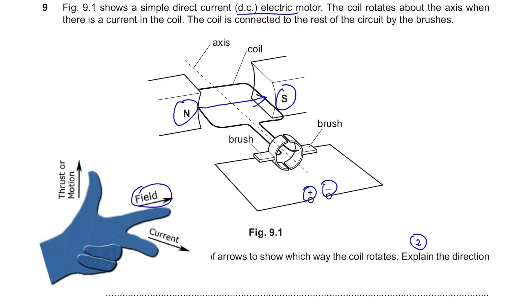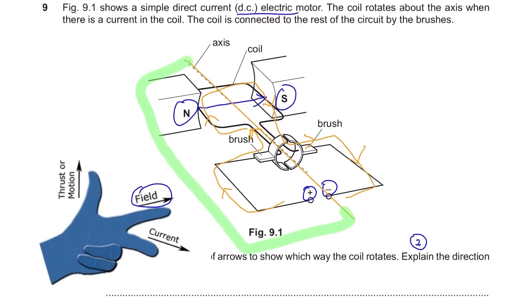Look at one side of the circuit first, then the other. For the left side, the direction of the magnetic field is from left to right and the current flows in a certain direction. Using your hand, you'll find that the motion is downwards. So the left side of the circuit has motion towards the bottom.